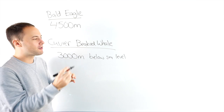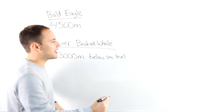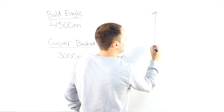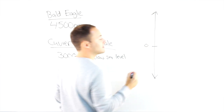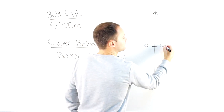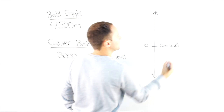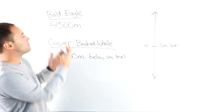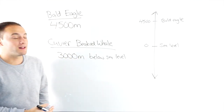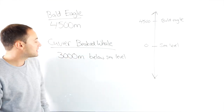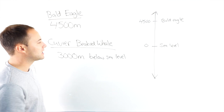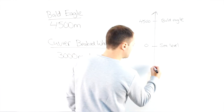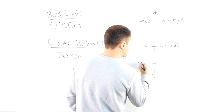Because I'm talking about sea level, instead of a horizontal number line, I'm going to draw a vertical number line. Zero is going to represent sea level. Above sea level is obviously going to be my bald eagle. Below sea level is going to be this whale, 3,000 meters below sea level. I'm going to write that as negative 3,000.